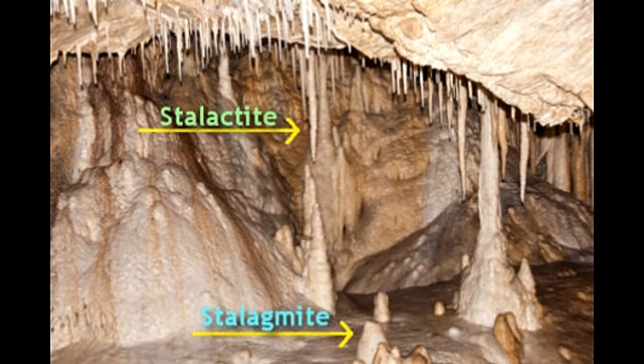Stalactites are formed as a result of water dripping from the ceiling. This water carries a mineral calcite, essentially found in limestone caves as it flows, and leaves the mineral deposits as it drips down the ceiling. Stalagmites, on the other hand, are also deposits of the same mineral, but are formed out of the water hitting the floor.